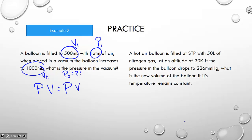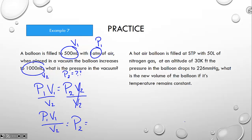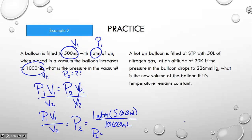If a balloon is filled to 500 milliliters at one atmosphere and placed in a vacuum where it expands to 1000 milliliters, what is the pressure within the vacuum? To solve for P₂, divide both sides by V₂. So: one atmosphere times 500 milliliters divided by 1000 milliliters. Milliliters cancel out, giving us half an atmosphere.